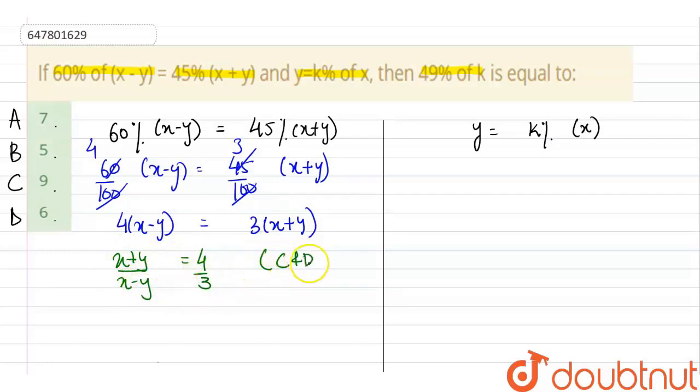Now, we'll apply componendo and dividendo rule. So, by that rule, x plus y plus x minus y upon x plus y minus x minus y will be 4 plus 3 upon 4 minus 3. From this we get x by y will be 7 by 1.